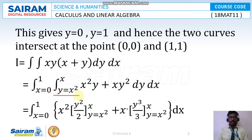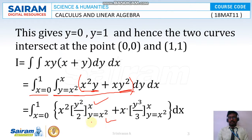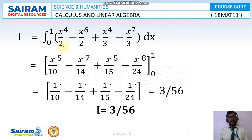So the x limit is 0 to 1 and the y limit is x² to x. Multiplying inside the integrand, we get x²y + xy² integrated dy dx. Integrating with respect to y, each term gives: from x = 0 to 1, we get y²/2 and y³/3 terms. Substituting the upper limit y = x and lower limit y = x² gives x⁴/2 − x²/2 for the first term.